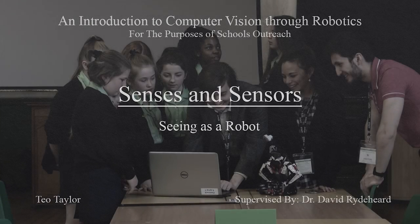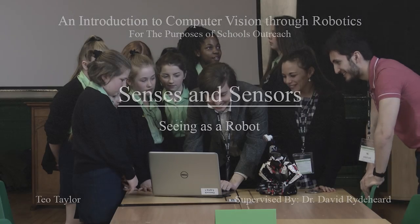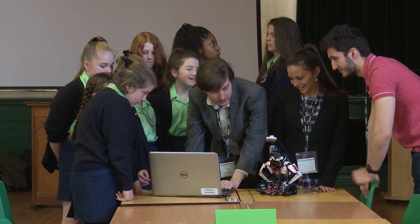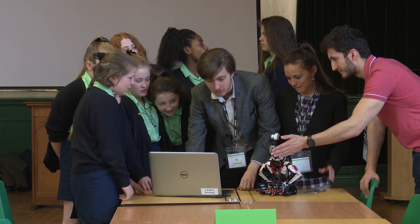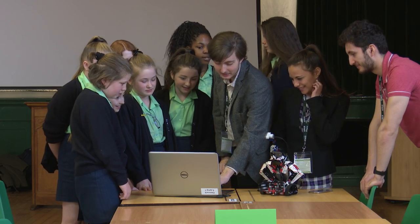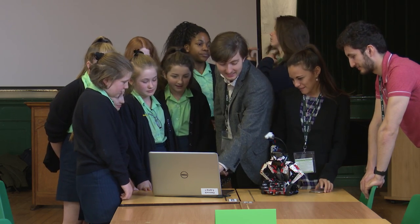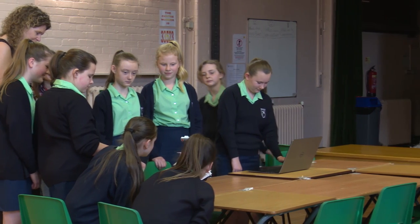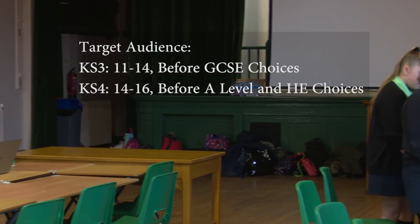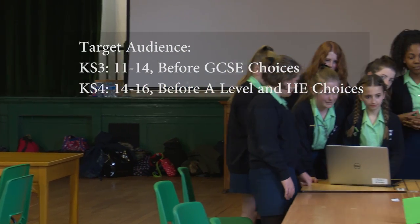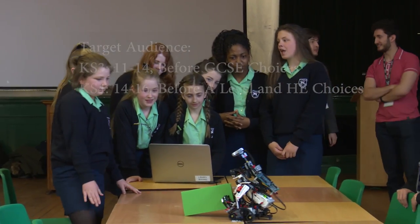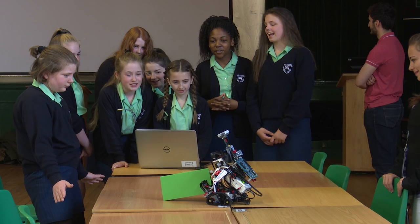Senses and Sensors: Seeing as a Robot is an activity developed as part of our school's outreach program. It aims to introduce computer science as a subject to school children and promote our school in the process. Whilst it can be adapted to suit children of any level between primary school and sixth form, it is mainly aimed at key stages three and four — that is, children aged 11 to 16 years old, who have yet to choose either their A-levels or higher education course.